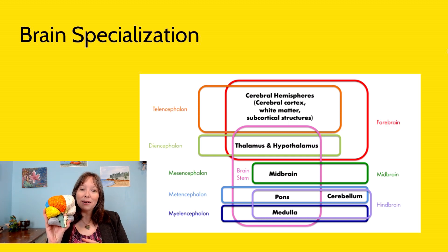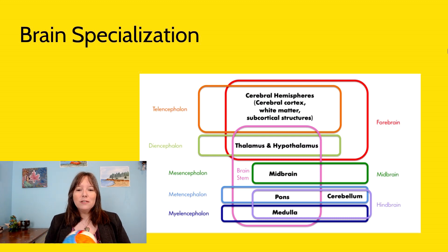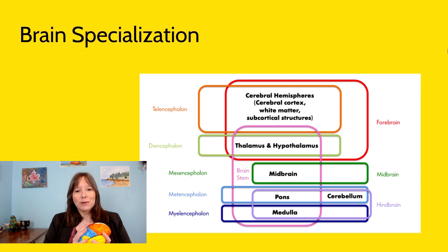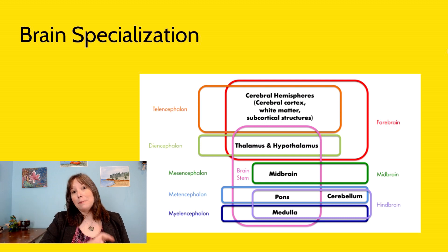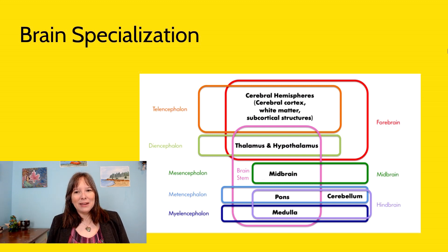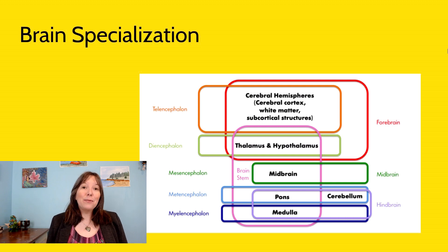By the time we are born, our brain has many different specialized regions, though you may see these broken down differently in different textbooks. Often we talk about the forebrain, midbrain, and hindbrain, though intro textbooks don't say much about the midbrain. The forebrain can be broken into the cerebral hemispheres and the limbic system, thalamus, and hypothalamus. The thalamus and hypothalamus can be considered both forebrain and brainstem depending on the source — so I would never test you on which one they belong to.